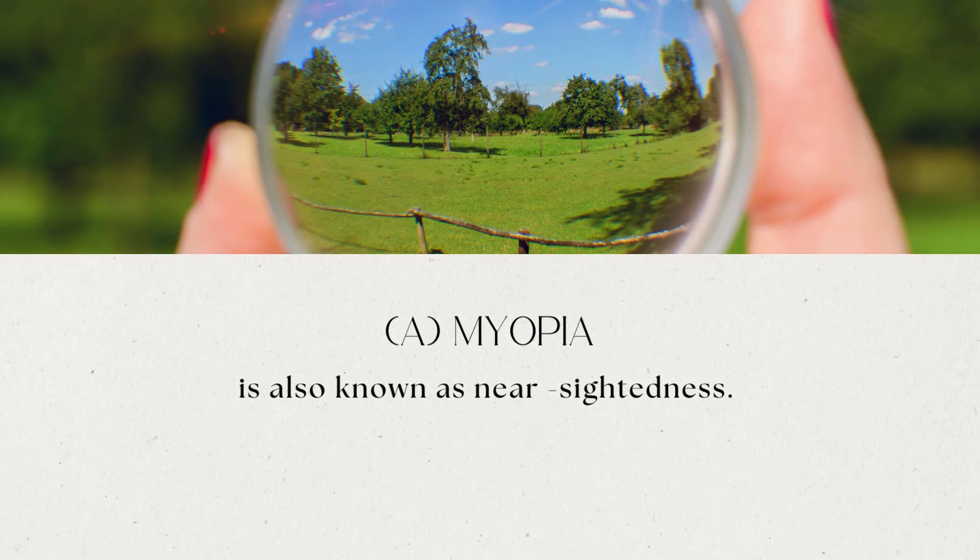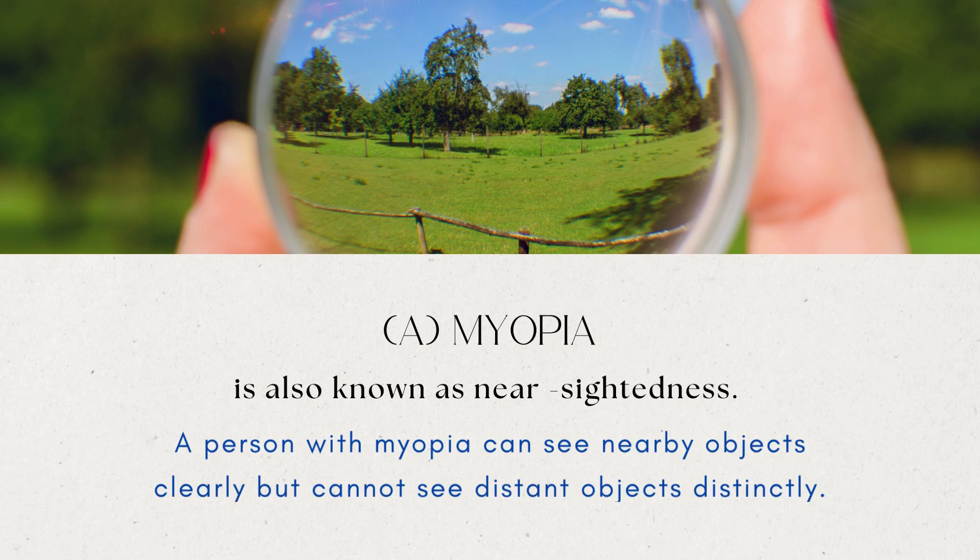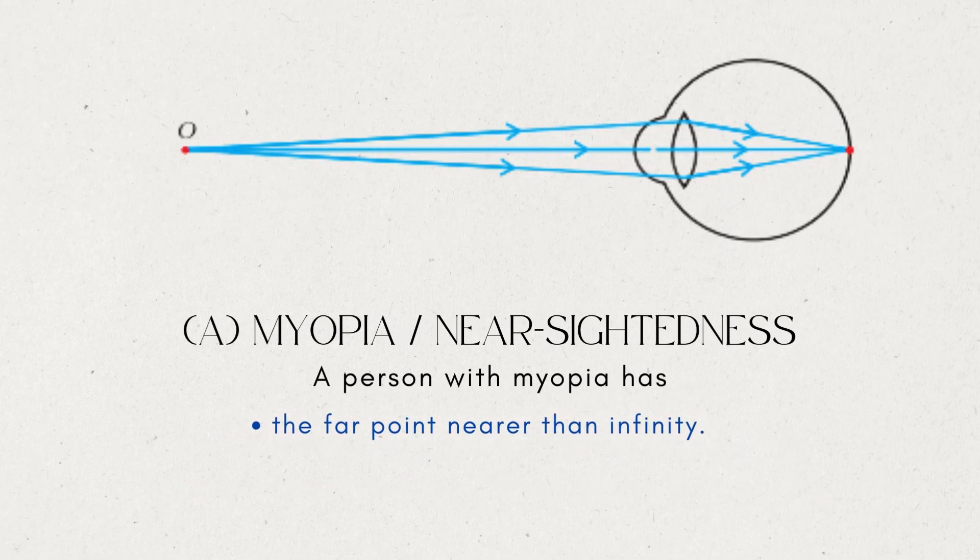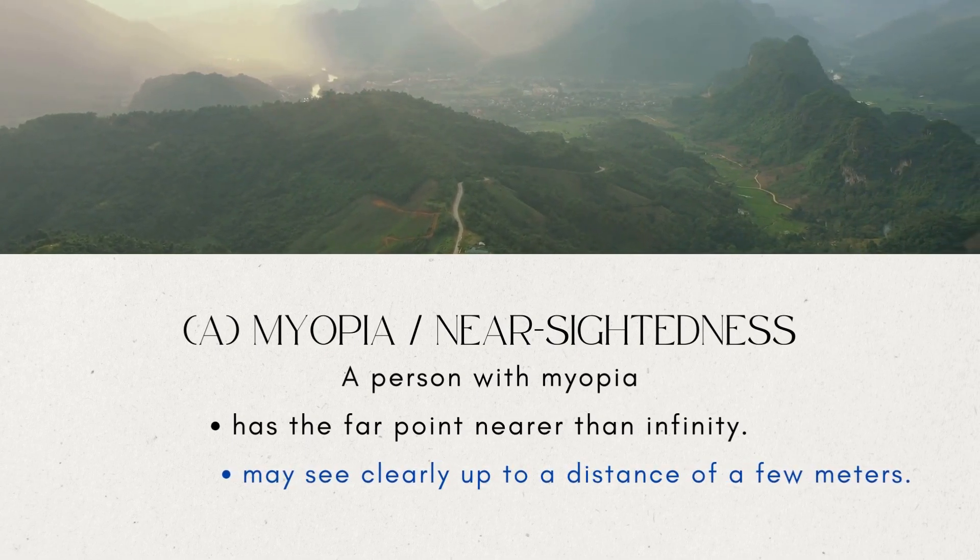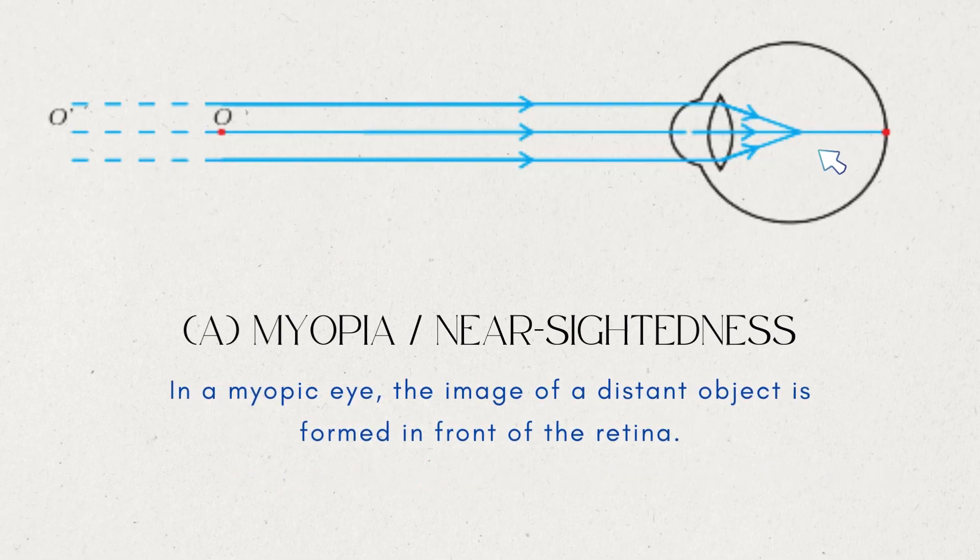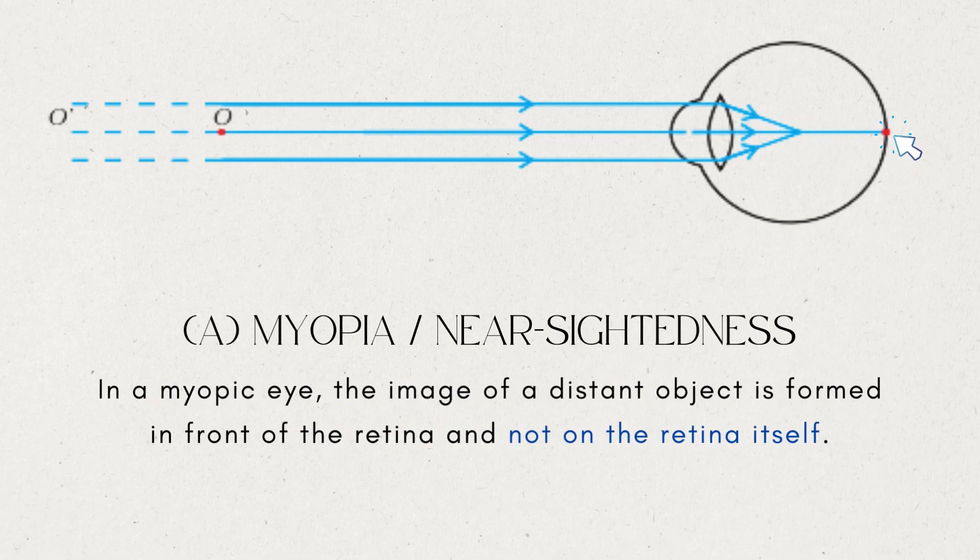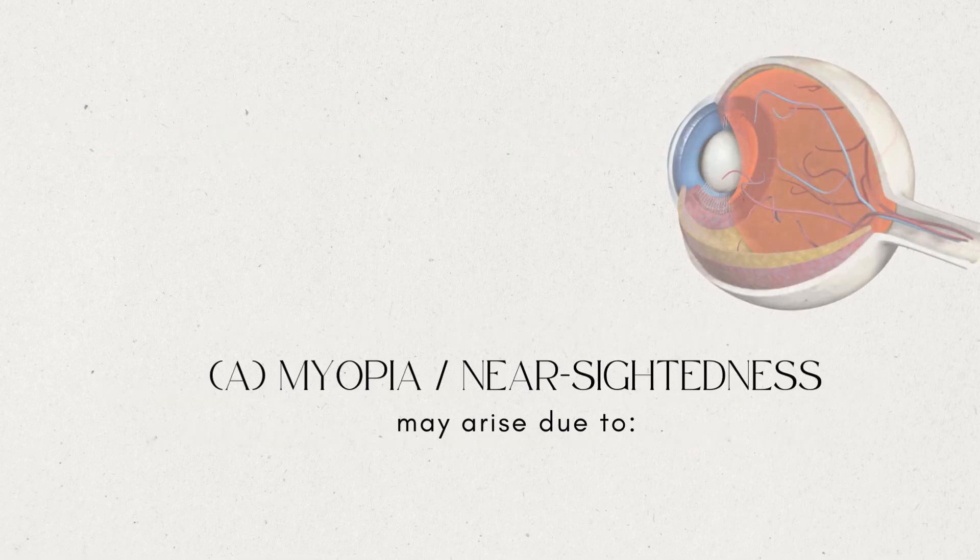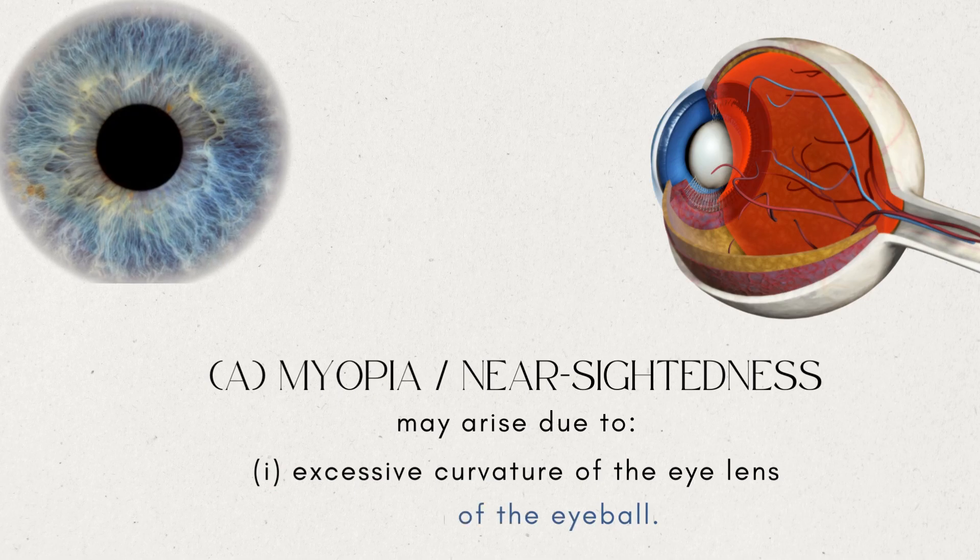Myopia is also known as nearsightedness. A person with myopia can see nearby objects clearly but cannot see distant objects distinctly. A person with this defect has the far point nearer than infinity. Such a person may see clearly up to a distance of a few meters. In a myopic eye, the image of a distant object is formed in front of the retina and not at the retina itself. This defect may arise due to excessive curvature of the eye lens or elongation of the eyeball.